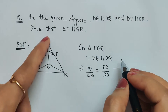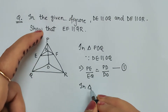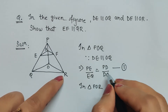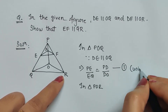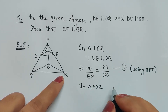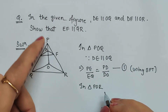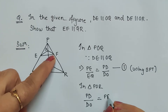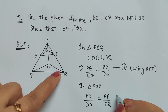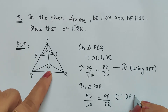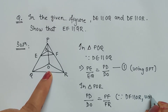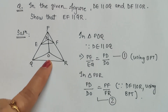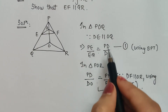The other given condition is DF is parallel to OR. So in triangle POR, since DF is parallel to OR, using basic proportionality theorem we can write: PD by DO is equal to PF by FR. Let us call this Equation 2.